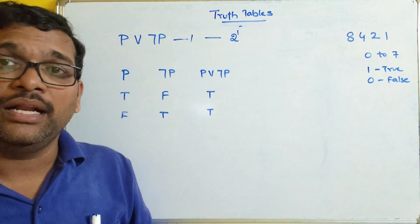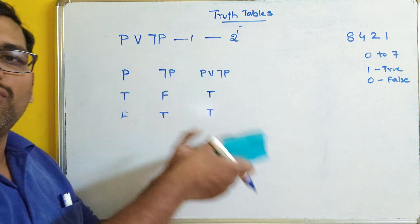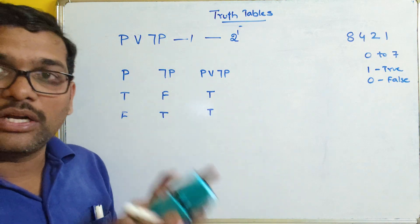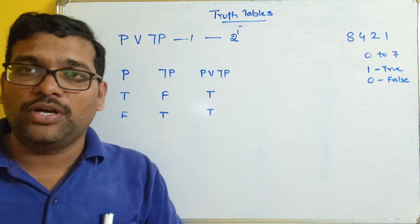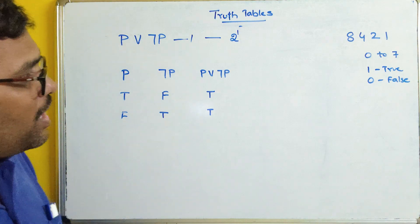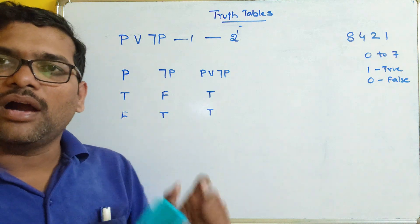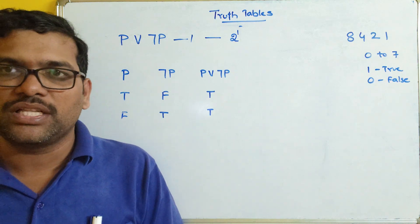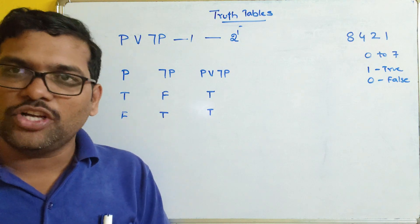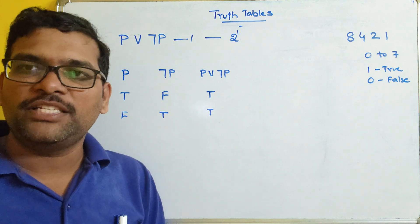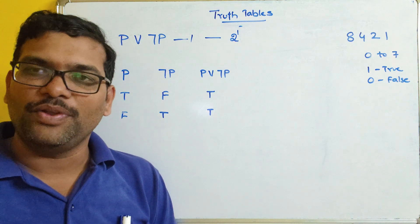First, find the number of simple propositions, then write all the combinations, then find the truth values for all combinations. Hope you enjoyed the session. If you have any doubts, feel free to post in the comment section. If you enjoyed the session, like and share with your friends, and don't forget to subscribe. Thanks for watching.